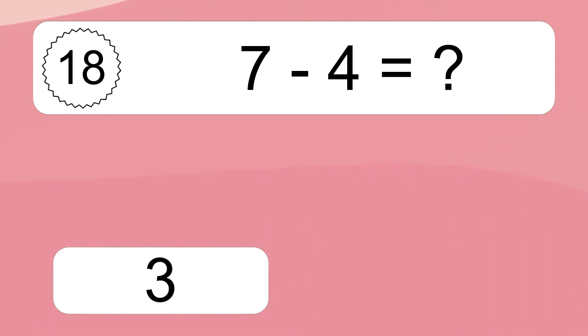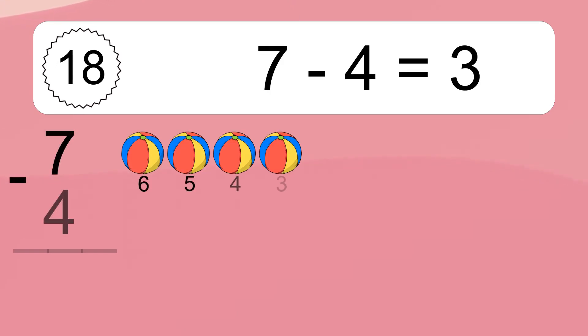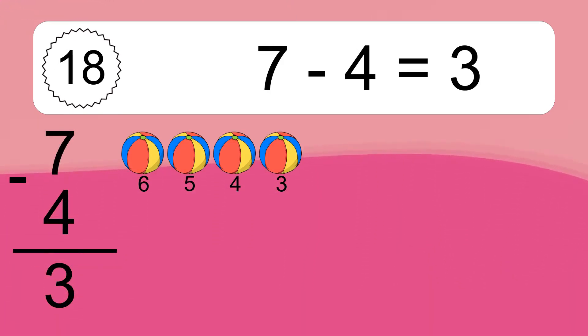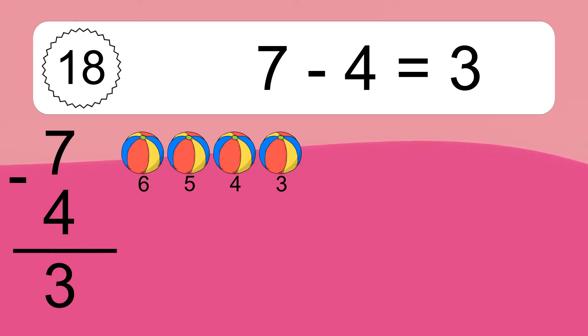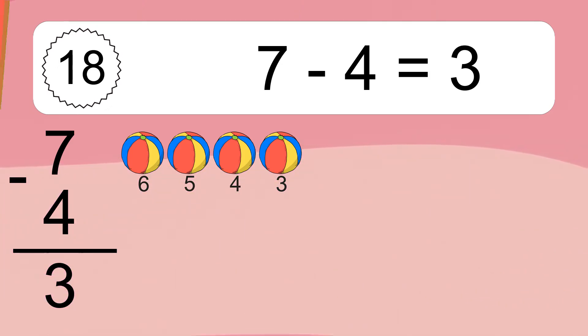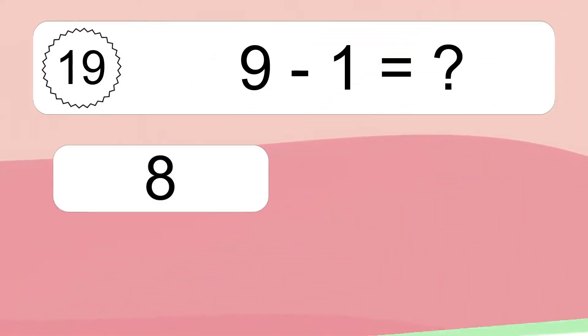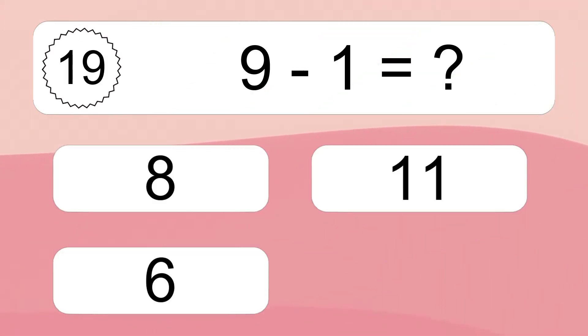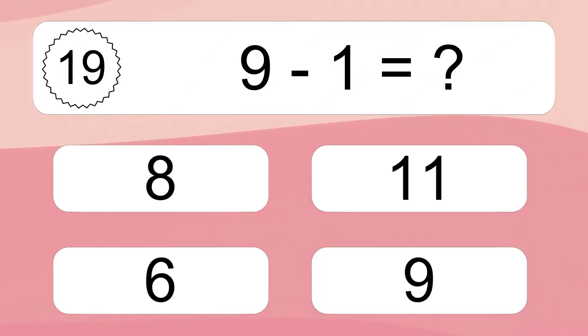7 minus 4 equals what? 7 minus 4 equals 3. Let's count it: 6, 5, 4, 3.